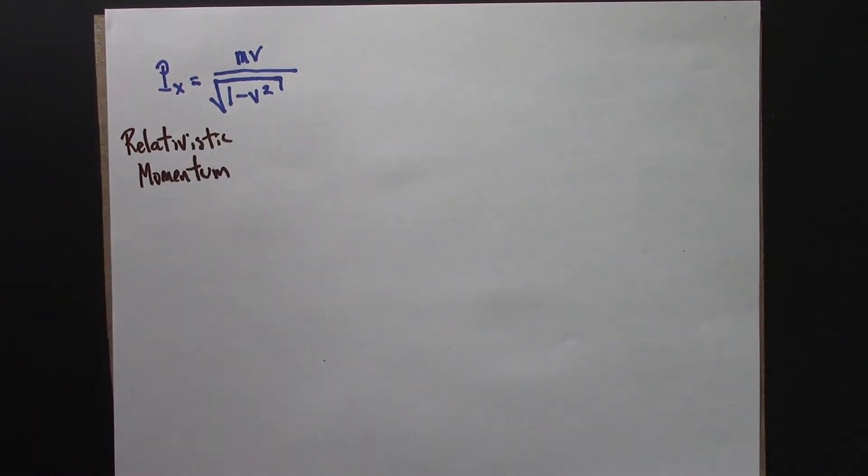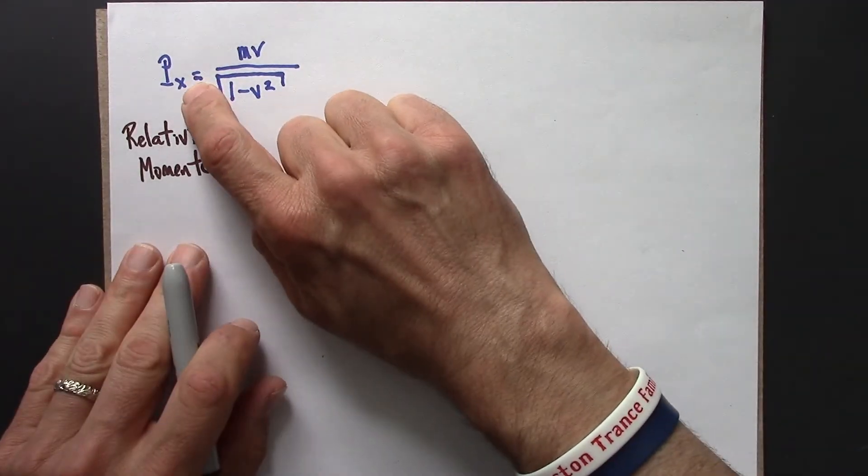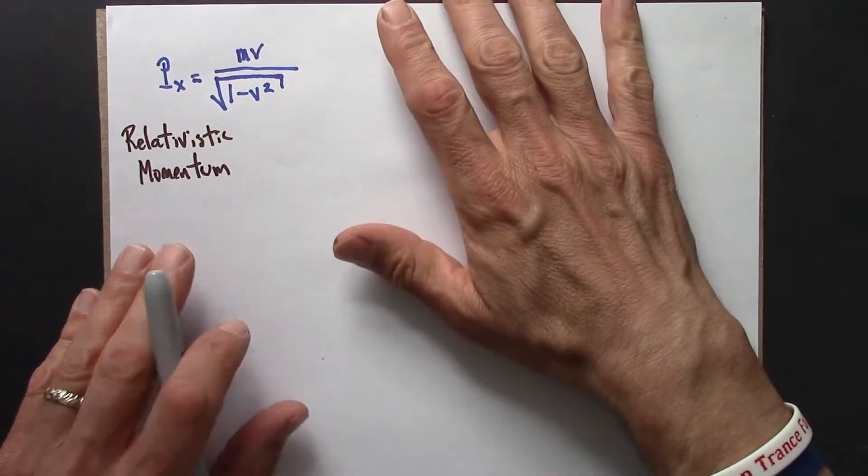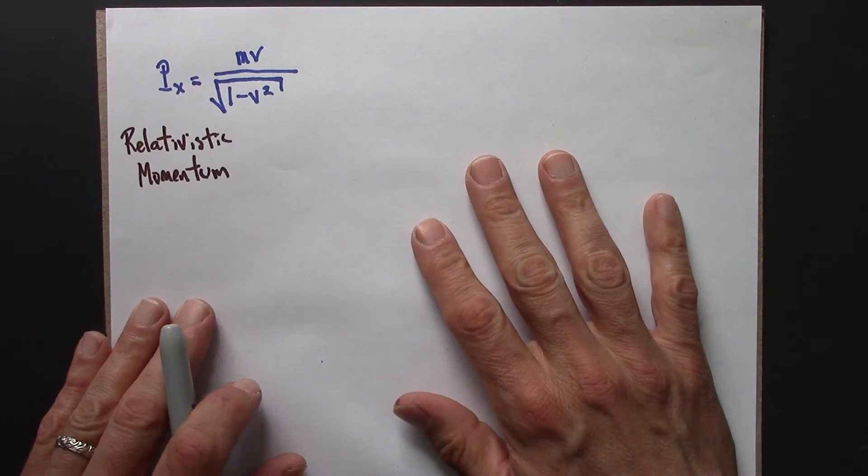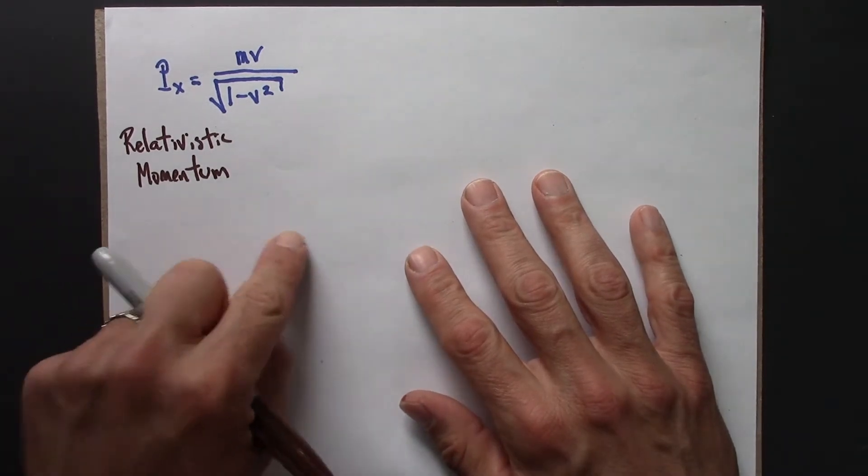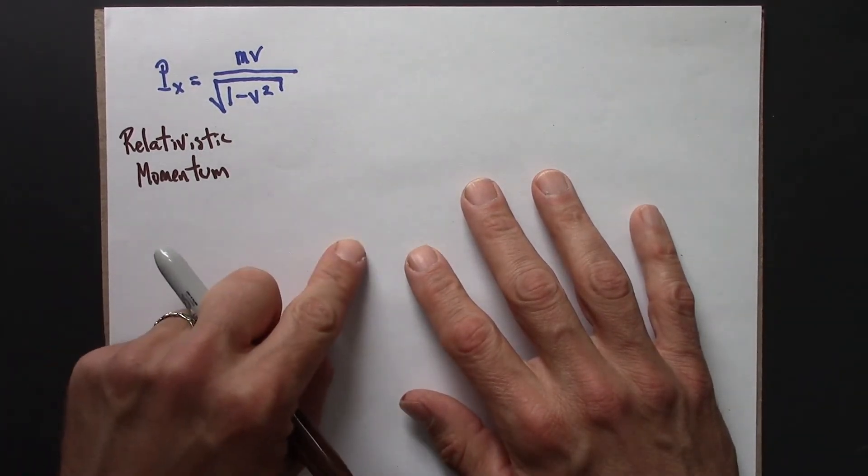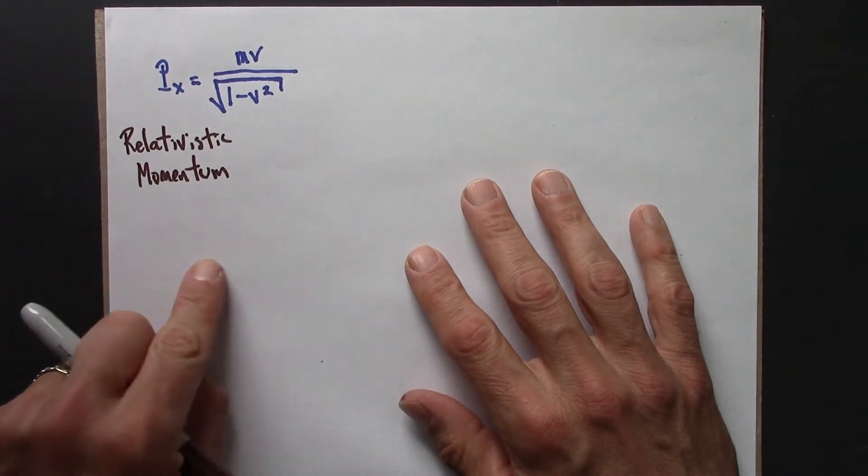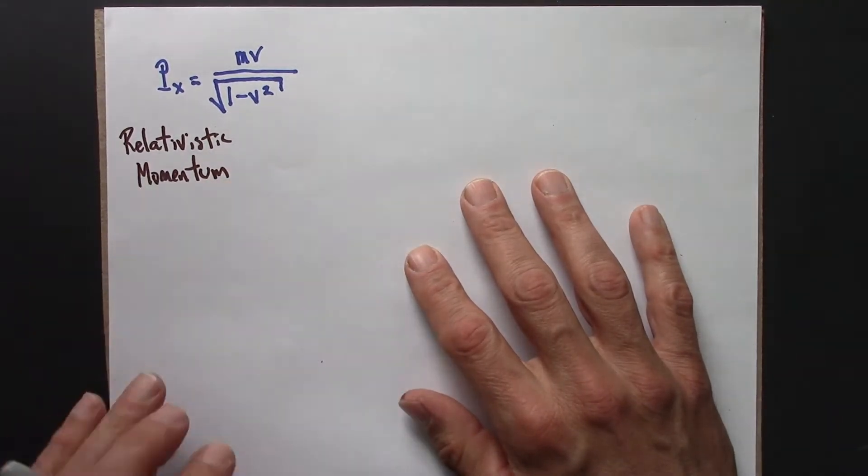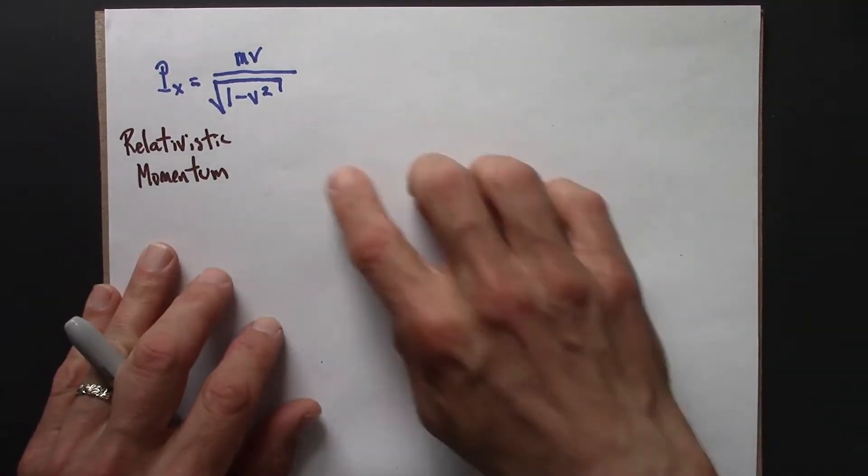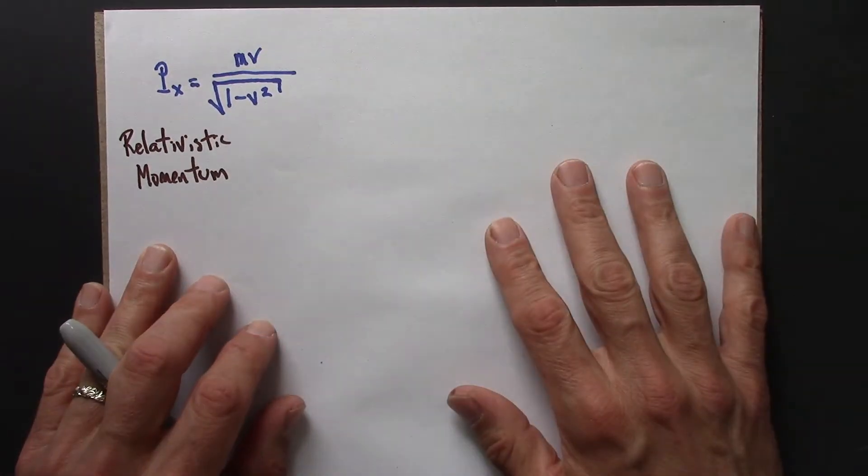More generally, momentum might have an x, y, and z component. I'm going to picture in this video and in this unit that we only have objects moving in one spatial direction, so they're not going this way and then that way or anything like that. So that'll just simplify a bunch of the notation.